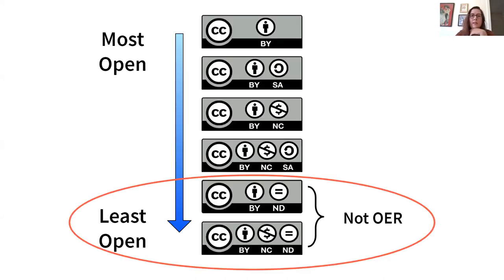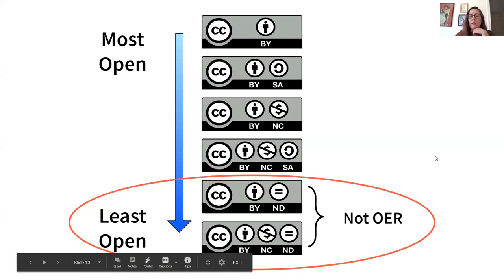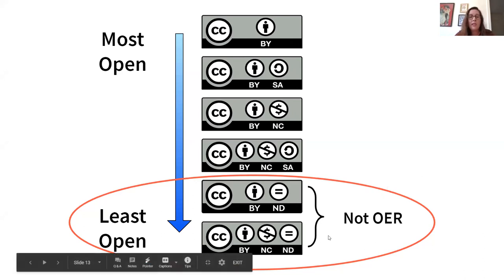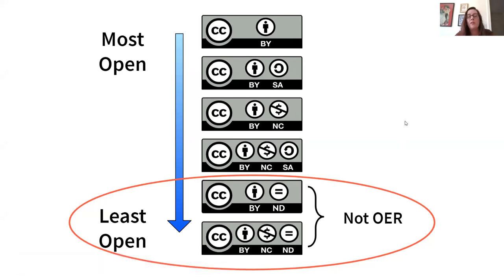This is the continuum of the licenses. The most open is CC BY, then CC BY Share Alike, Non-Commercial, and Share Alike Non-Commercial. The two licenses at the bottom that are least open are the ND or No Derivatives licenses — they're technically not OER. These are the most limiting, and when you're looking at resources, if something has an ND, you have to use it as is and as a whole — you can't change it.